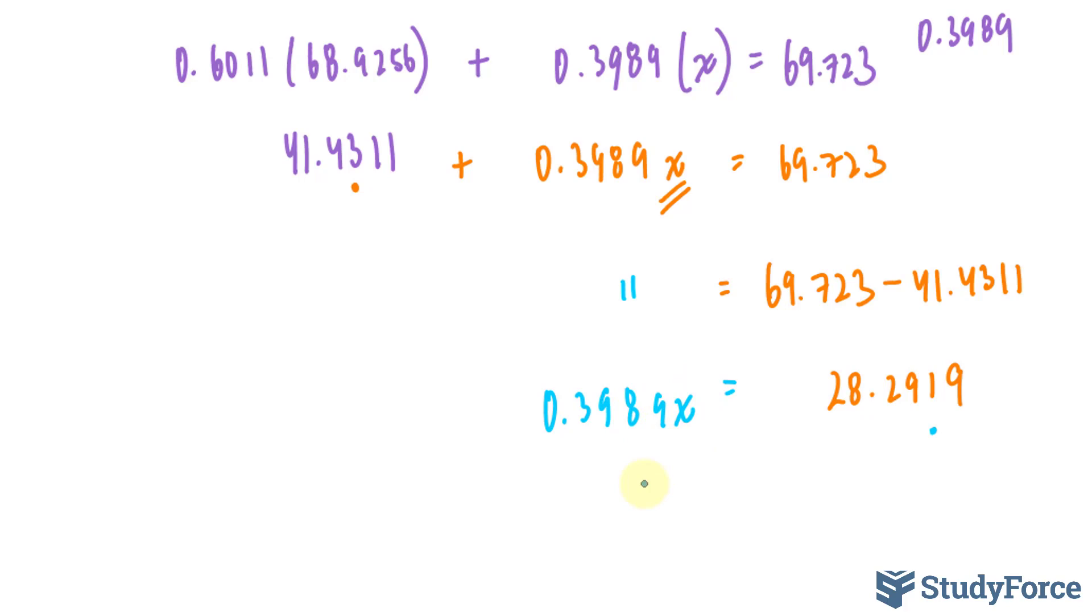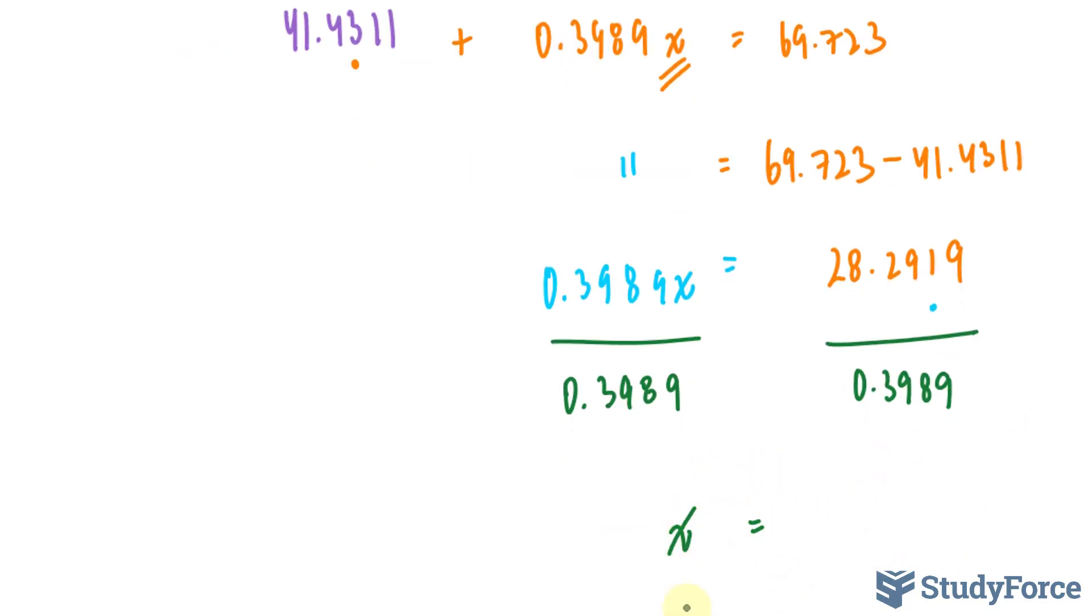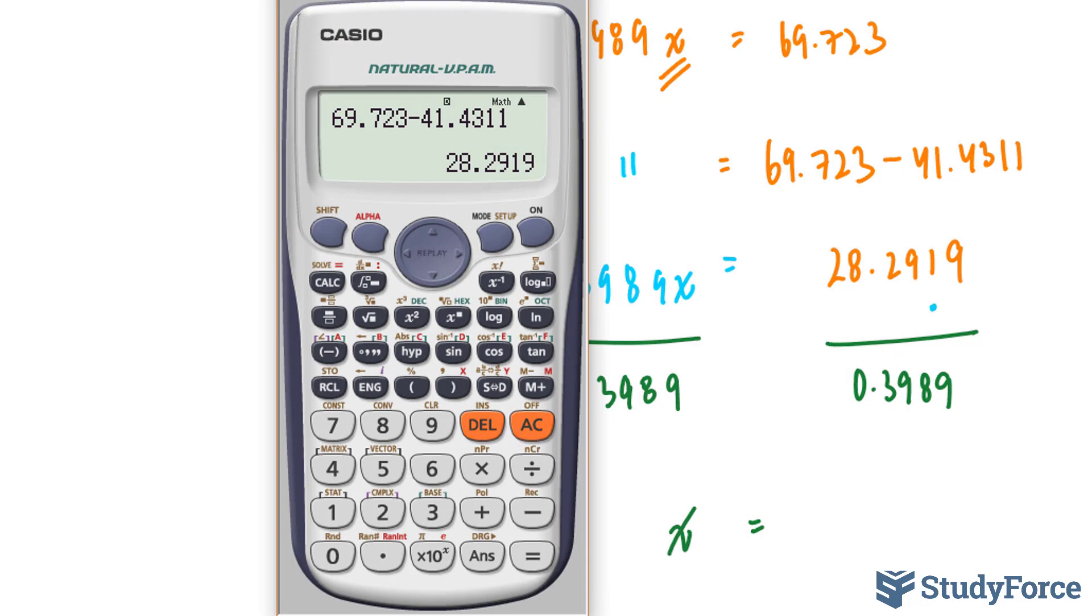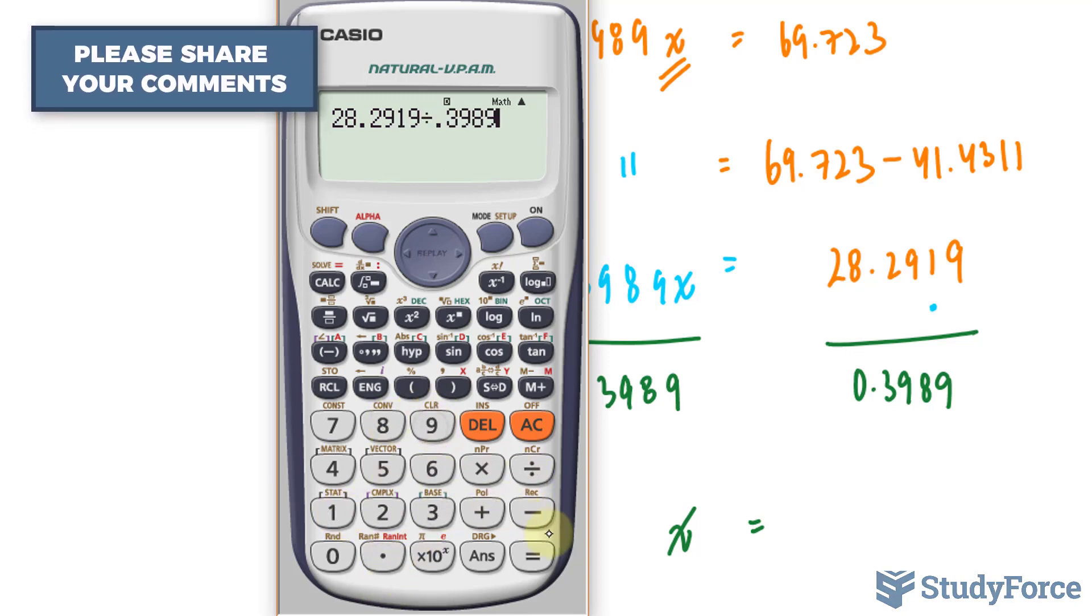Now, to solve for this x, we will divide both sides by the number that's in front of the x, 0.3989. So our final answer should have four significant figures. This number has five significant figures, this one has four. Let's find out the mass of Gallium-71. 28.2919 divided by 0.3989. That gives us 70.92.